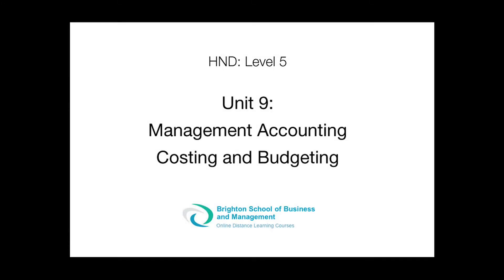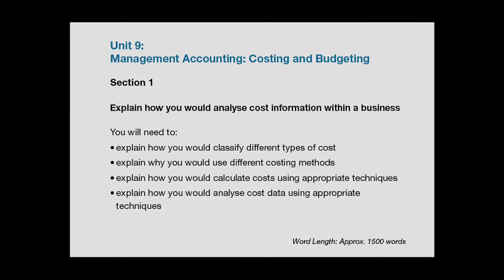Welcome to this podcast for Brighton School of Business and Management students studying for the HND level 5 courses. For Section 1, bullet point 1, you need to describe the different types of costs such as fixed and variable, and explain why certain costs are allocated to each cost type — for example, rent would be classified as a fixed cost.